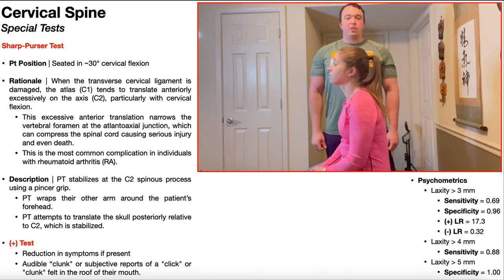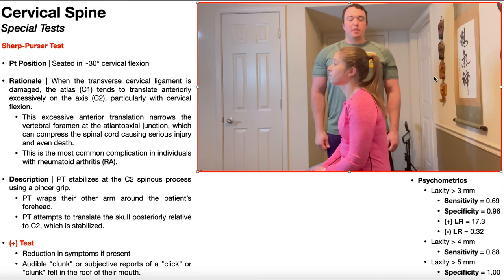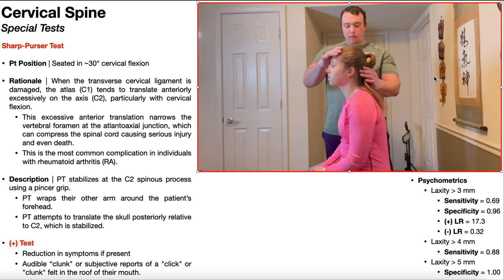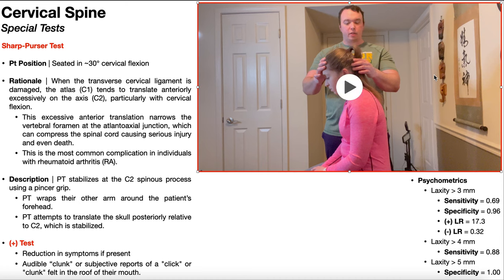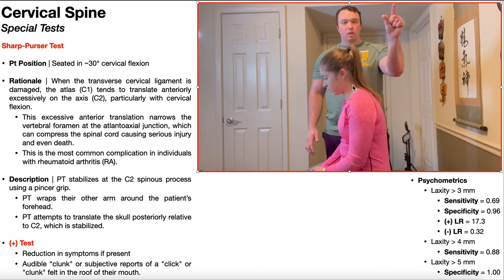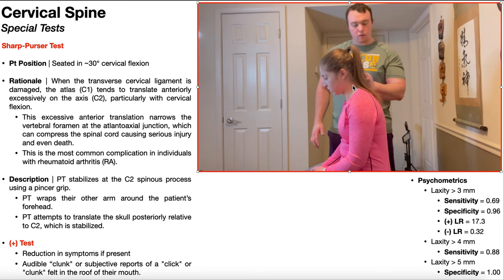To perform the Sharp-Purser test, the patient is going to be positioned and seated in approximately 30 degrees of cervical flexion, like you see here. If the patient does have damage to the transverse cervical ligament, this position is probably going to be provoking to their symptoms. From here, the PT is going to stabilize at the C2 spinous process using a pincer grip, formed between the thumb and the index finger.